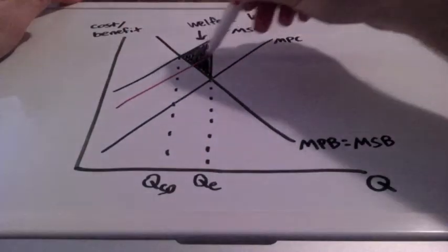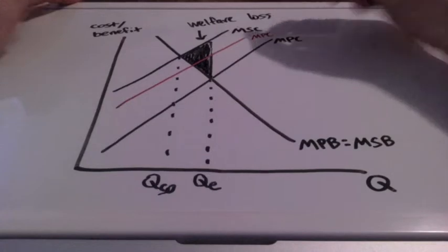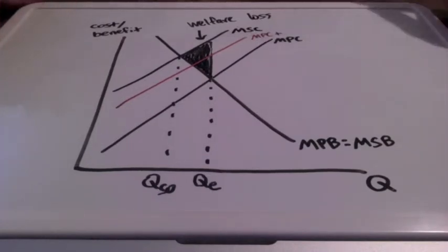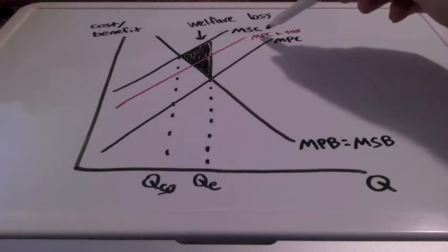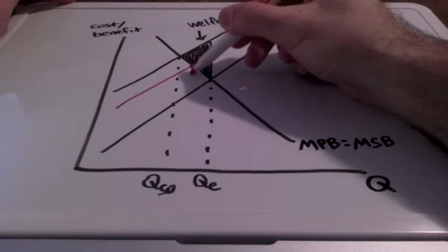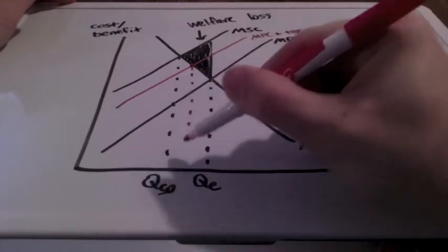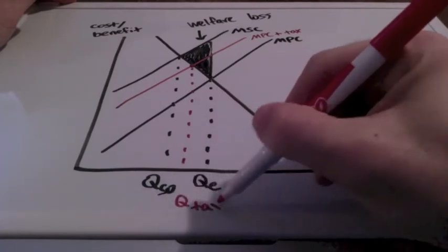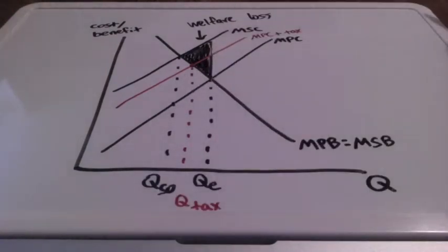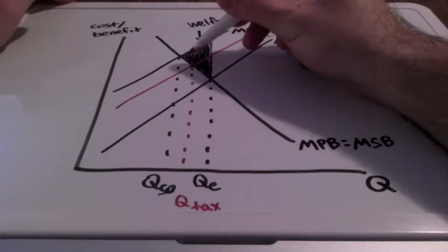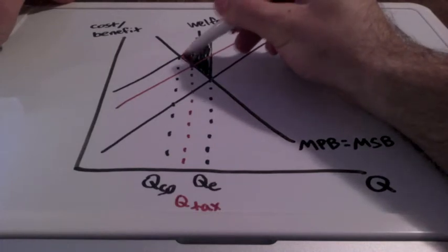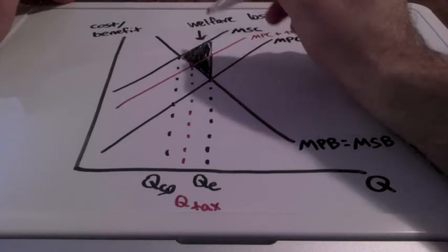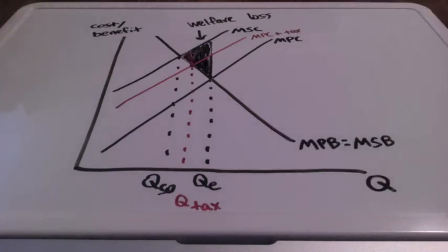A tax would be one way to reduce the quantity produced. This would be marginal private cost plus tax. We find this new intersection of marginal private cost and marginal private benefit, and this would be our quantity with the tax. As you can see, we're getting closer and closer to the socially optimal level. The social cost is still higher, but our welfare loss — this entire area — is much less compared to where it was earlier. So, one way to correct a negative externality is through a tax.